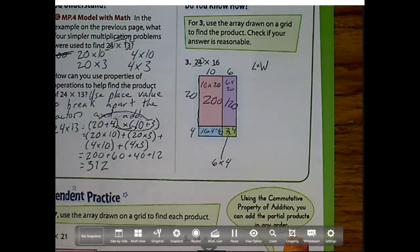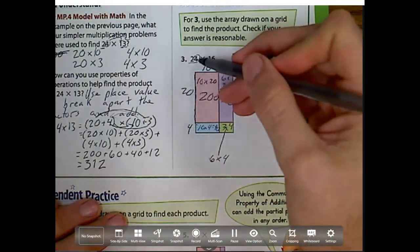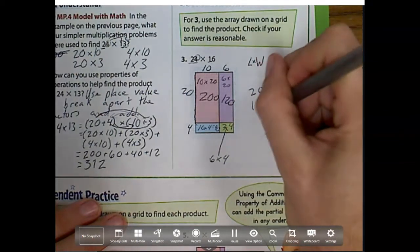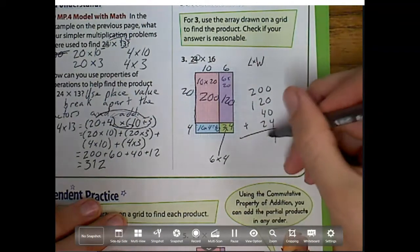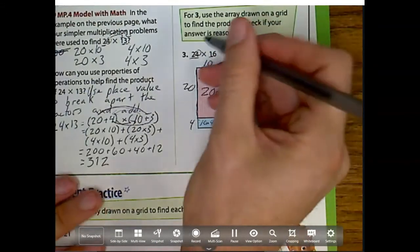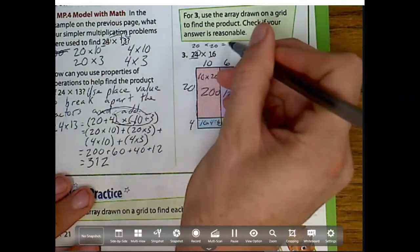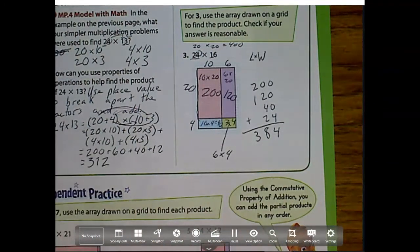Now what do I do? I have all of these pieces, 1, 2, 3, 4 pieces. Because notice there's 1, 2, 3, 4 place values, and I add them up. 200 plus 120 plus 40 plus 24. What is that? That's 384. Now it says check if your answer is reasonable. Well, let's check. Using estimation, this is close to 20, this is close to 20, 20 times 20 is 400. Is 400 close to 384? Yes it is, so we can go on to our next one.